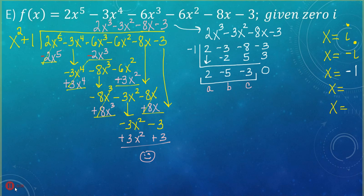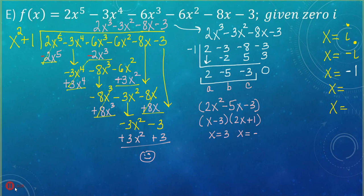To find the last two roots, we factor 2x² minus 5x minus 3. This factors down to (x − 3)(2x + 1), so my last two solutions are x equals 3 and x equals negative one-half. Both of these were possible roots we had identified using the p/q theorem. Now we have found all five solutions to this function — two were imaginary and three were real.